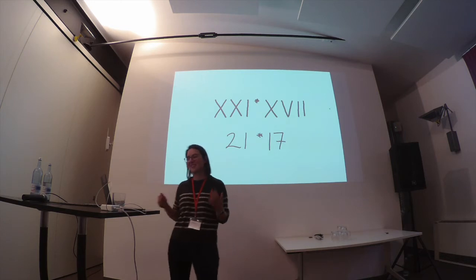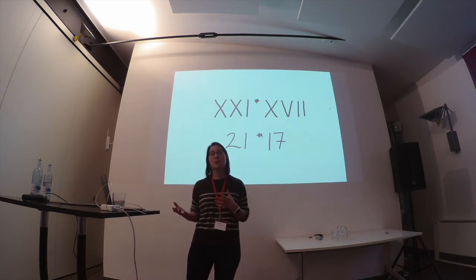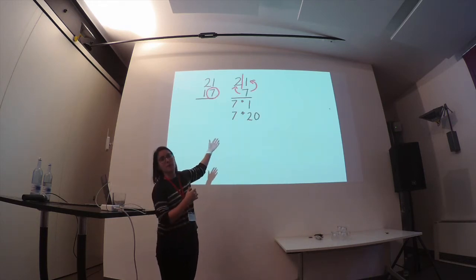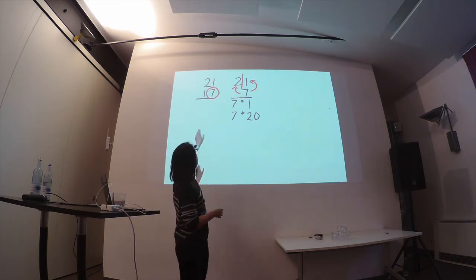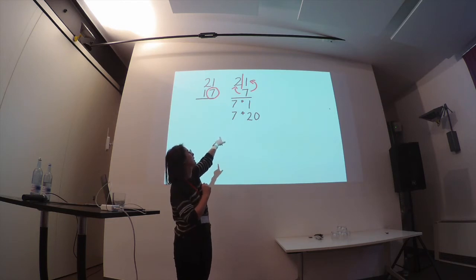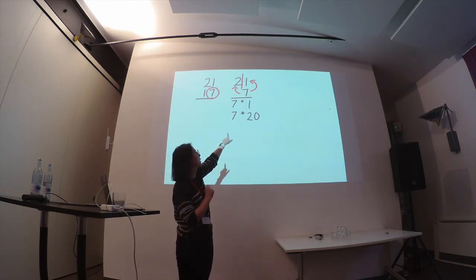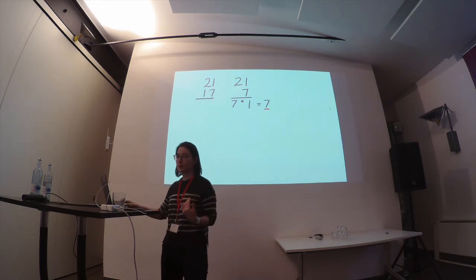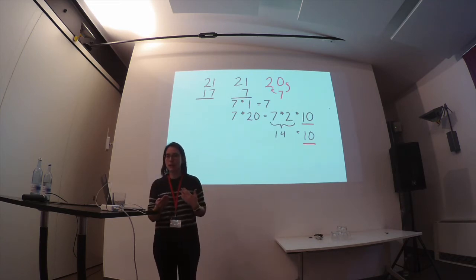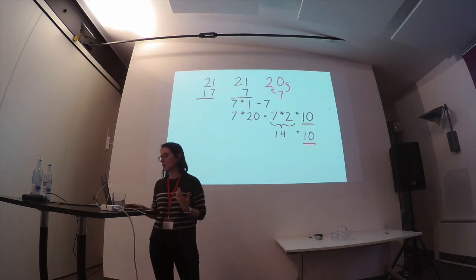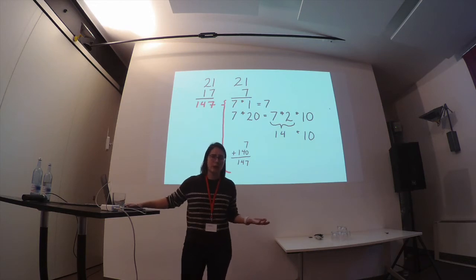Why don't we do that again? Let's try it this time with Arabic numerals, which came into common use in approximately the 14th or 15th century. Again, we can use the visuals of the notation to do the calculation. From the bottom row, you take the seven — the rightmost character — and treat it in isolation. You multiply it against the first number above, which is one, and then against the tens. For the first calculation we get seven. For the second, seven times two is 14, times 10, which gives us 120. Put that all together, you get 147.